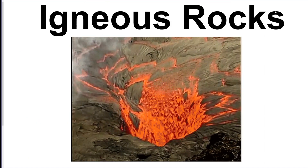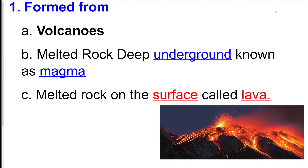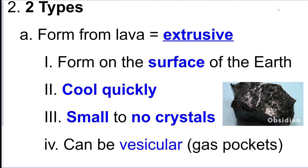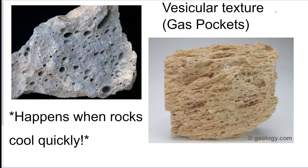Igneous rocks are the next type. They form from volcanoes or in magma chambers — either deep underground in magma or on the surface from lava. There are two types. The first is called extrusive, meaning they form on the surface. They cooled really quickly and didn't have a chance to create crystals, so they have small to no crystals. They can also have gas pockets, which gives them a vesicular texture.